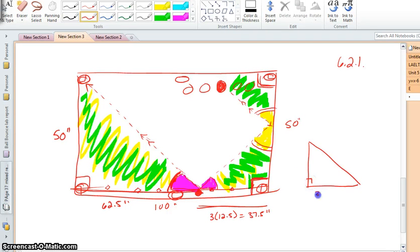It has a right angle, it has a side of 62.5 and it has a side of 50. If this were theta, we can use the inverse tangent with the ratio of 50 over 62.5 to find theta. So go ahead and push those buttons for me and get me a value for theta.